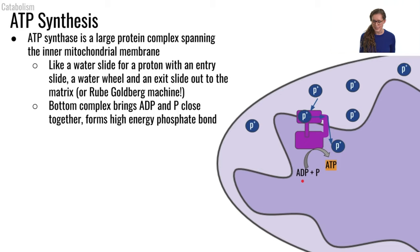So that's how we're actually synthesizing the ATP here. The protons are entering the ATP synthase, they're going through a little water wheel that's causing the ATP synthase protein to change shape, bring the ADP and phosphate in close proximity to make ATP.